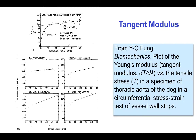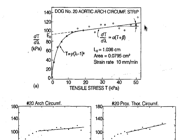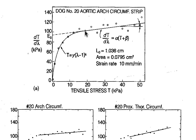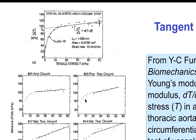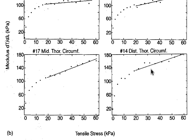Blood vessels are non-linear, and plotting the circumferential tangent modulus versus the circumferential stress for various sections of the dog aorta, we see that a linear fit — i.e., an exponential stress-strain relation — is not a particularly good approximation for any of the samples, especially here in the aortic arch closest to the heart. Moving away from the aortic arch, where the elastin content is highest, to the distal thoracic aorta, the linear approximation gets a little bit better, but is still not a good approximation at low stresses.